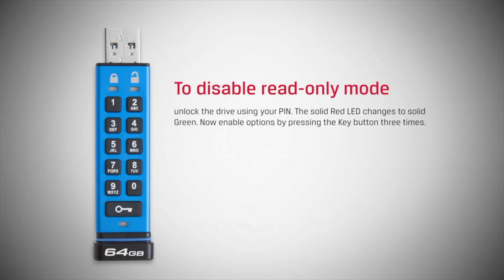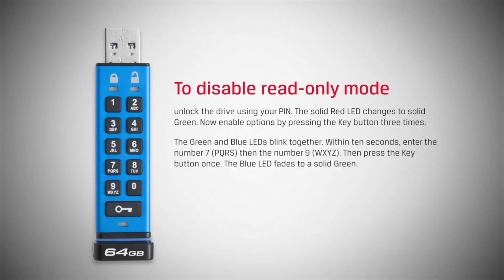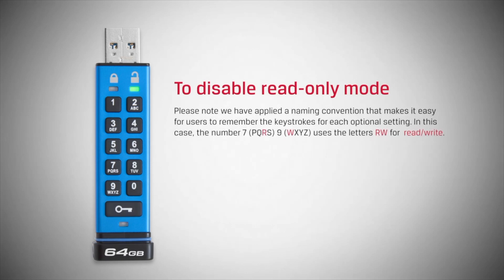To disable read-only mode, unlock the drive using your pin. The solid red LED changes to solid green. Now enable options by pressing the key button three times. The green and blue LEDs blink together. Within 10 seconds, enter the number seven, then the number nine, and then press the key button once. The blue LED fades to a solid green. The number seven and nine uses the letters RW for rewrite.